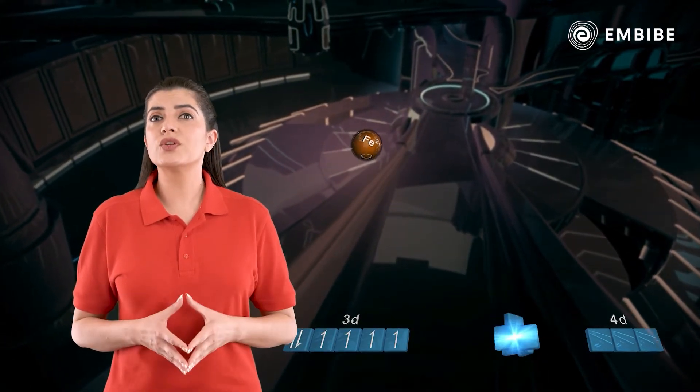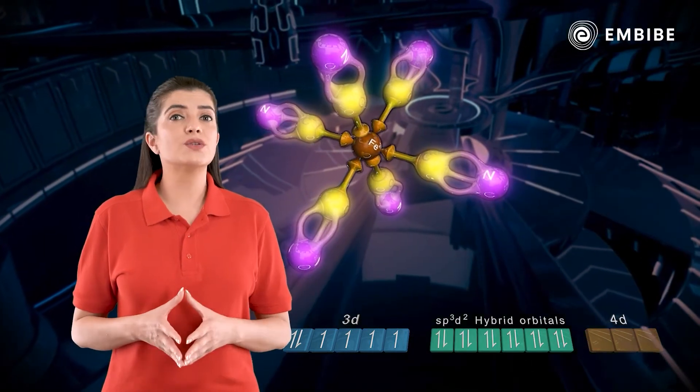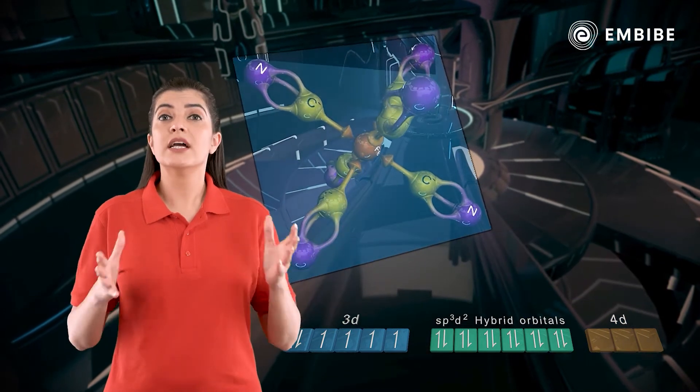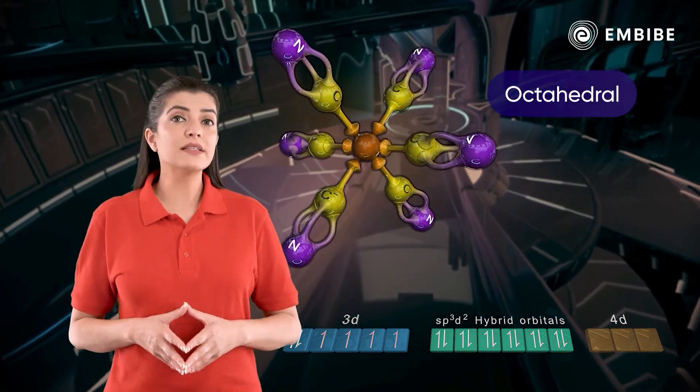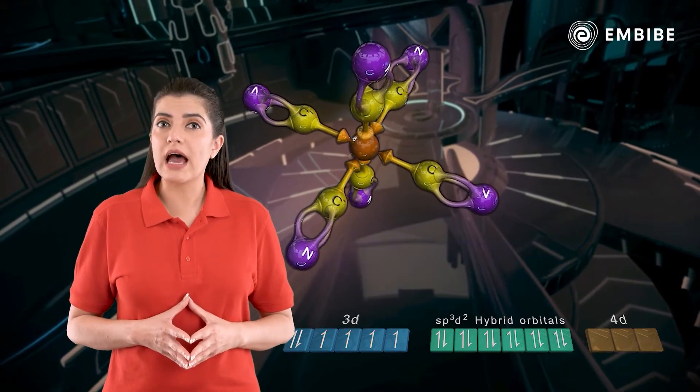These six sp3d2 hybrid orbitals can accept the electron pairs donated by the six CN- ions. The complex shall still have octahedral geometry, but as there are four unpaired 3d electrons, it will now be a paramagnetic complex.